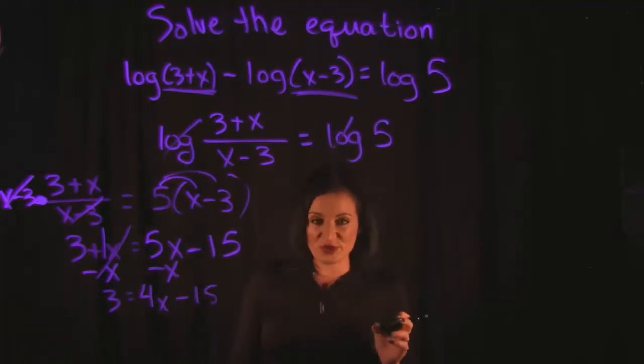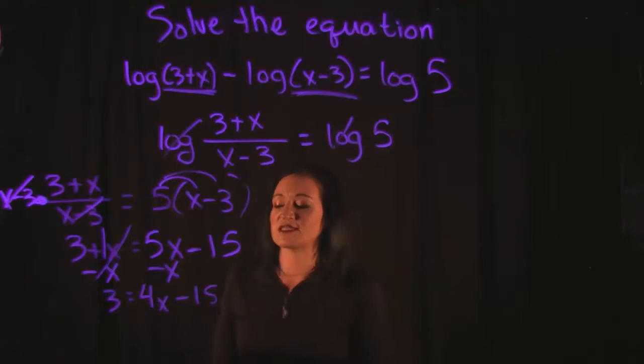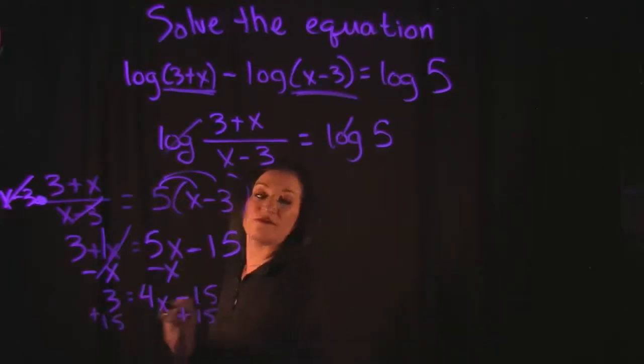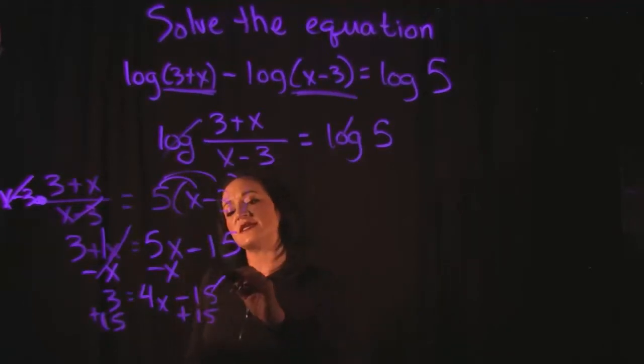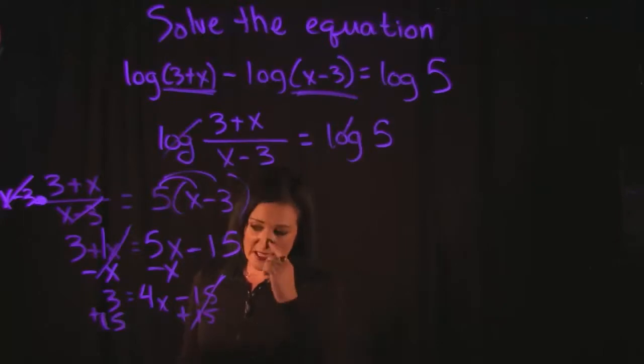Since I got my variables together on the right hand side, I need to move my numbers to the left hand side. So this minus 15, I will do the opposite and add 15 to both sides. When we add that 15 to both sides it is going to cancel out on the right hand side.